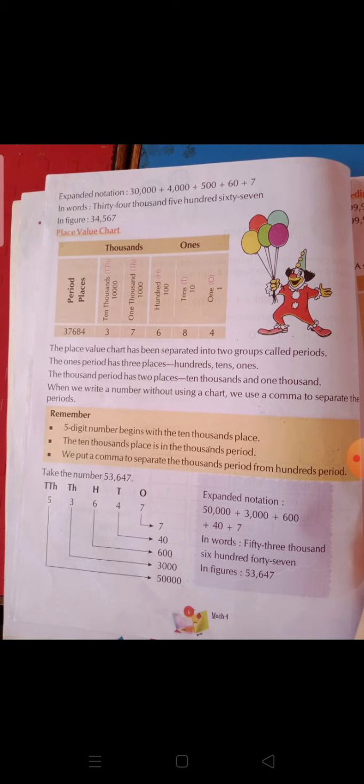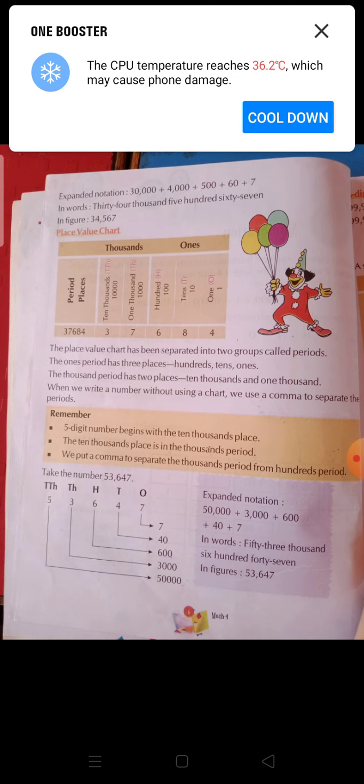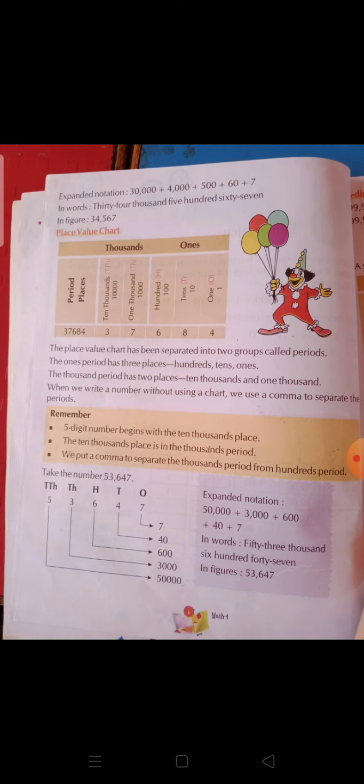We have to remember three points. First, a five-digit number begins with the ten thousands place. Second, the ten thousands place is in the thousands period. We have learned that there are two periods, and the place of ten thousand will be in the thousands period.